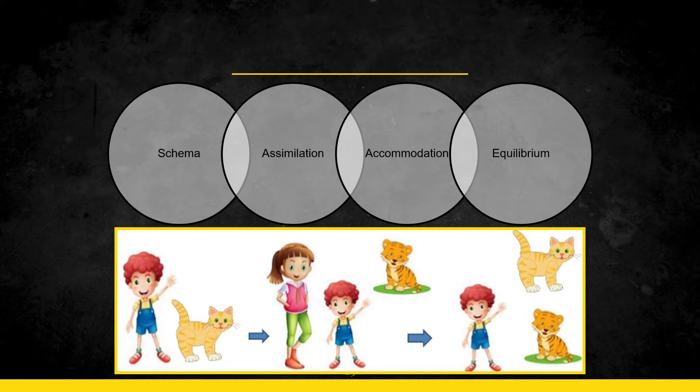Now equilibrium is basically the balance between assimilation and accommodation. So the individual basically naturally seeks equilibrium. Nobody likes disequilibrium. So this disequilibrium is when what the person thinks and what the environment is is different and that is very dissatisfying. So the child tries to balance both of these, it tries to balance the assimilation and the accommodation phase, and that is known as the equilibrium.